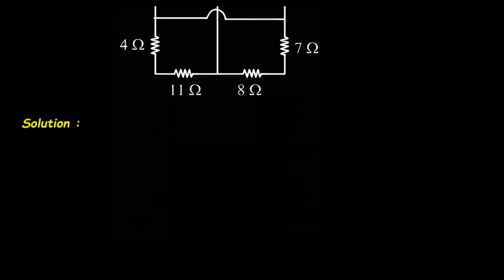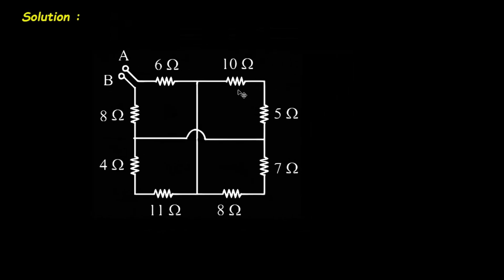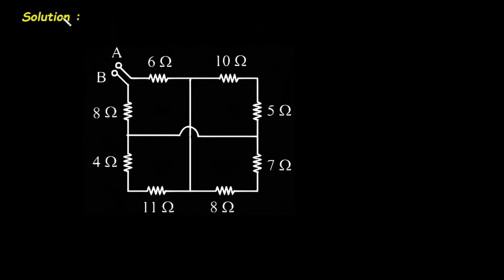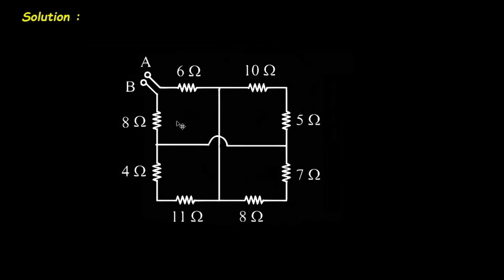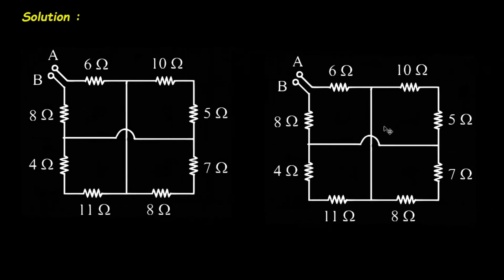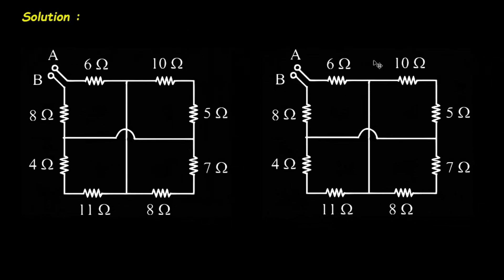Solution. First of all we will take this circuit. Here we can see this 15 ohm, this 10 ohm and this 5 ohm — they are connected in series. So this will be simply 15 ohm. We will replace these two resistances by a single resistance of 15 ohm.